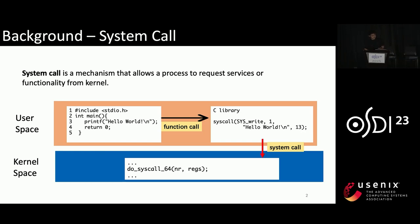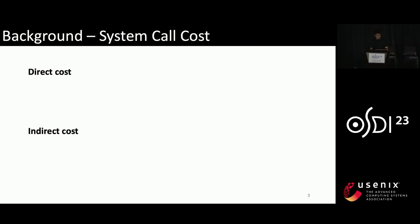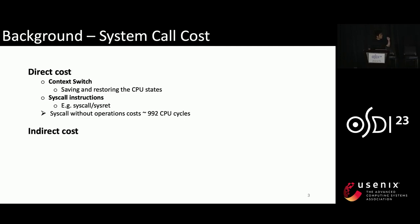We all know that syscall is a mechanism that allows a process to request services or functionalities from the kernel. In this simple example, printf will trap into kernel via the write syscall, and the kernel will output the string to the console. The system call has some cost, which includes direct cost and indirect cost.